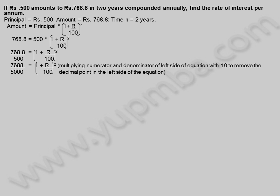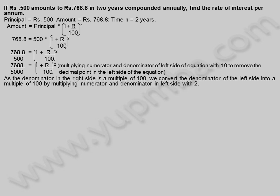Multiplying numerator and denominator of the left side of the equation with 10 to remove the decimal point. As the denominator on the right side is a multiple of 100, we convert the denominator of the left side into a multiple of 100 by multiplying numerator and denominator on the left side with 2. 15,376 by 10,000 is equal to 100 plus r by 100 whole square.